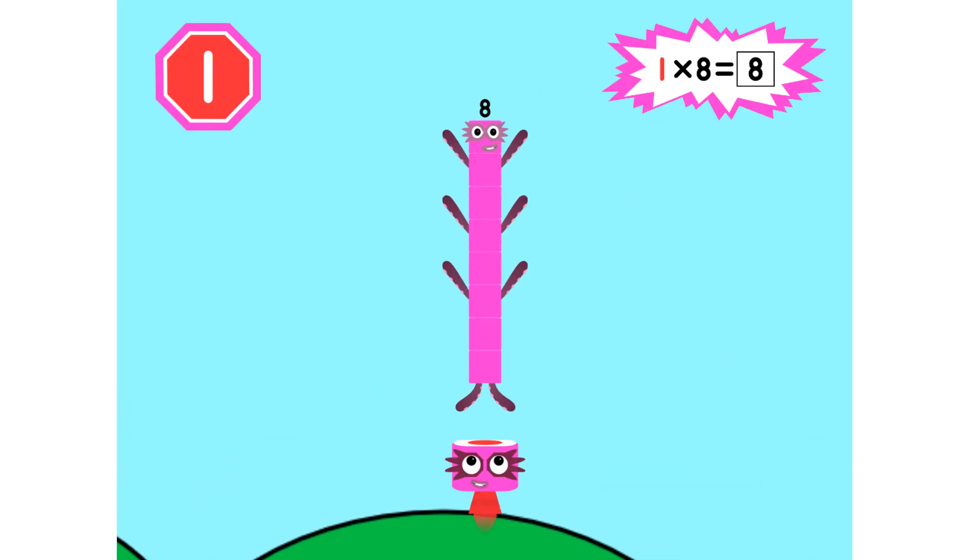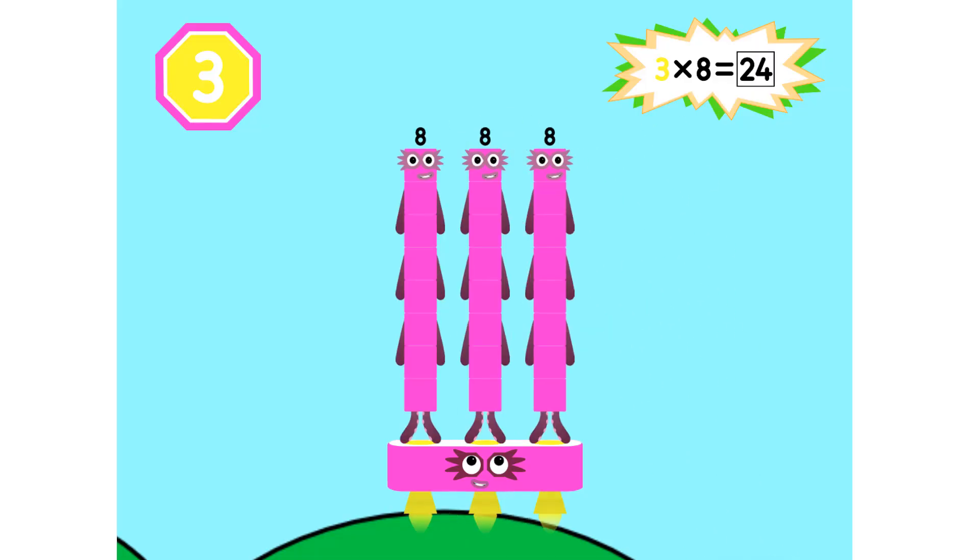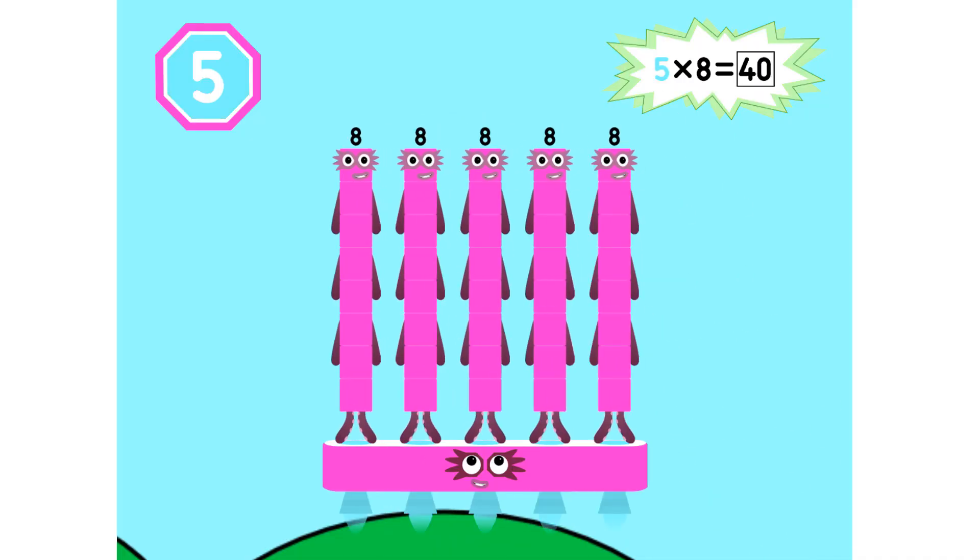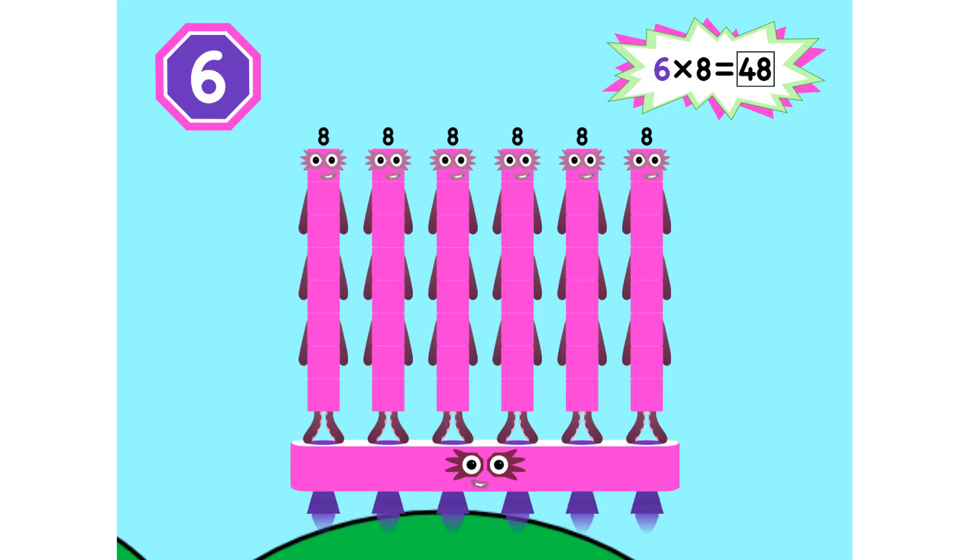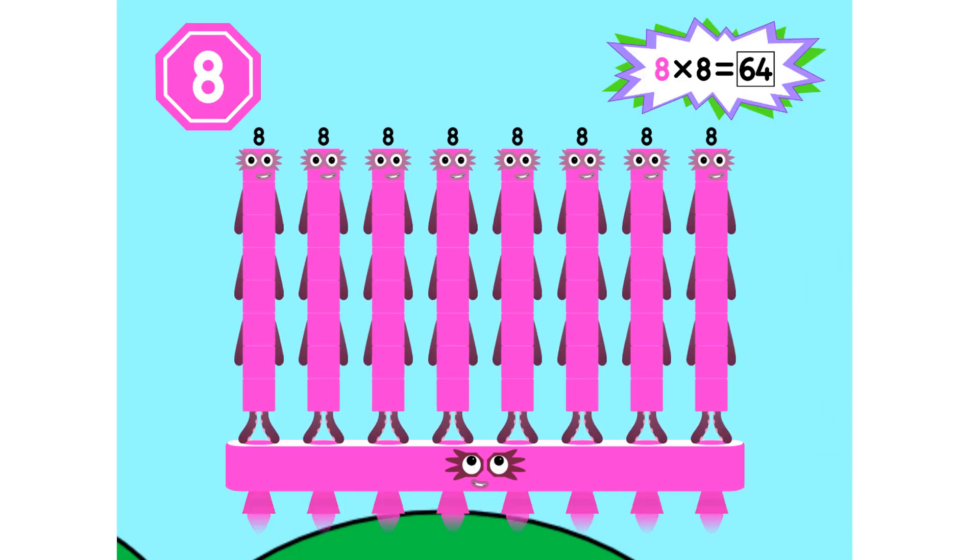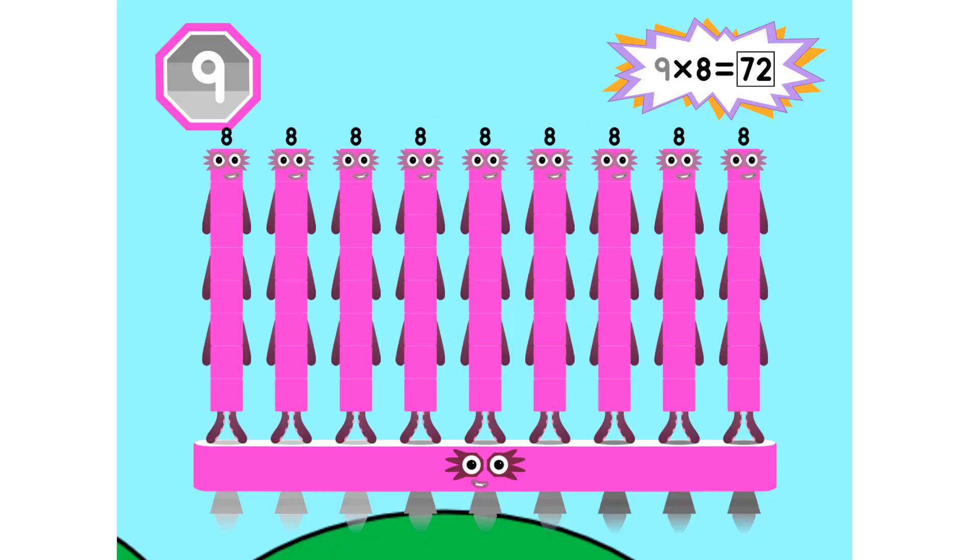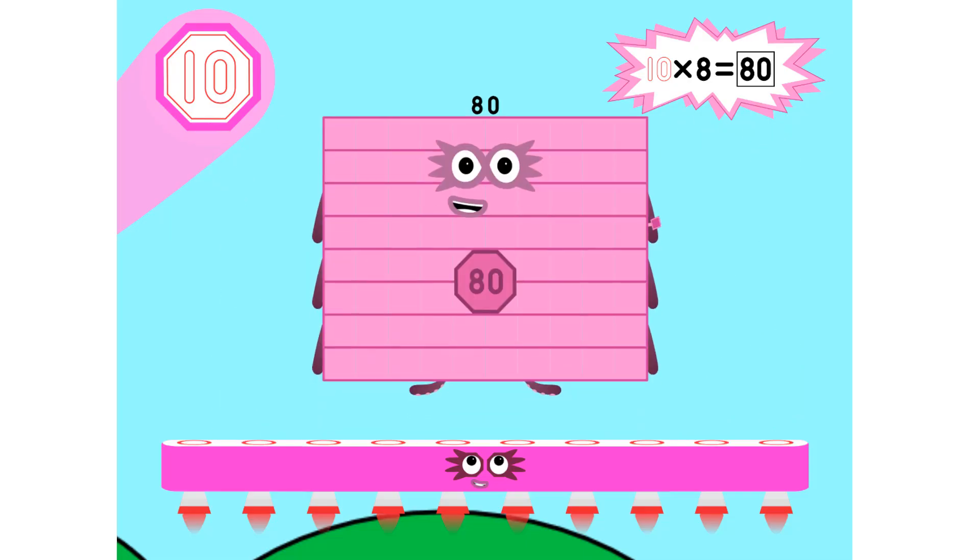Super 8s, assemble! 1 8 is 8. 2 8s are 16. 3 8s are 24. We will heed the call. 4 8s are 32. 5 8s are 40. 6 8s are 48. We'll catch you when you fall. 7 8s are 56. 8 8s are 64. 9 8s are 72. Here's the biggest of them all. The Super 8 who has it all? 10 8s are 80.